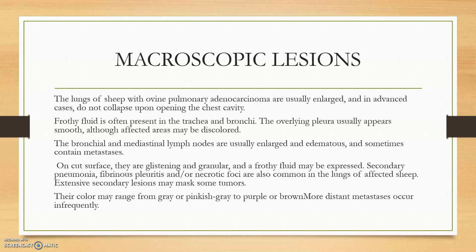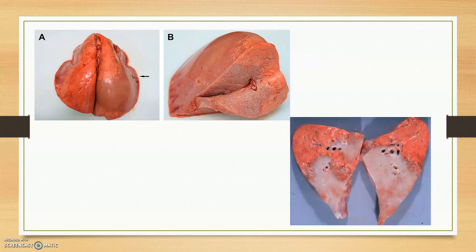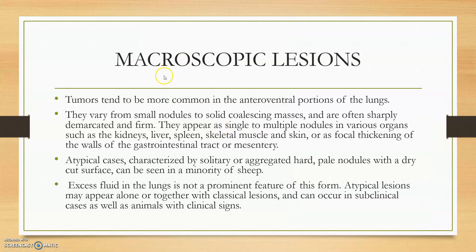The lungs will not collapse when opening the thoracic cavity. Pericardial and pleural fluids will be hemorrhagic. This is the adenocarcinomatous tissue, completely fibrosed. Macroscopic lesions can also be seen on the kidneys, liver, spleen, and skeletal muscle. The secondary lymph nodes will have hemorrhagic portions, and lesions are mainly concentrated in the lymph nodes and chest area.